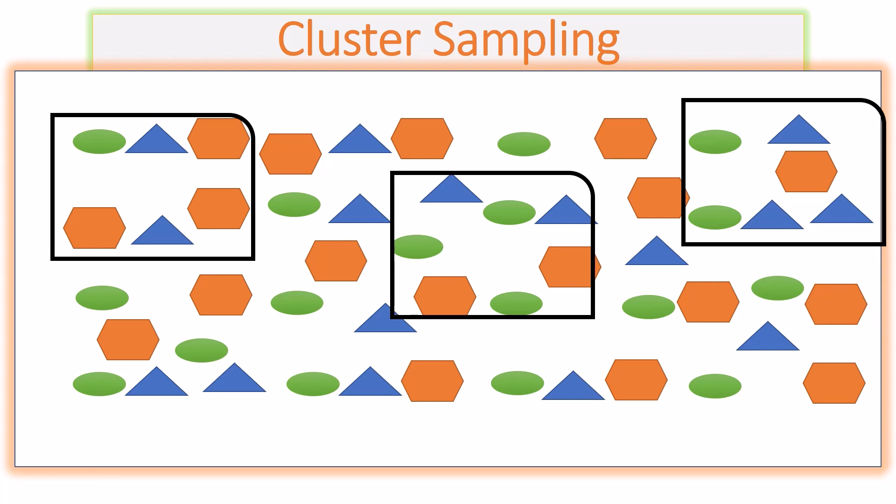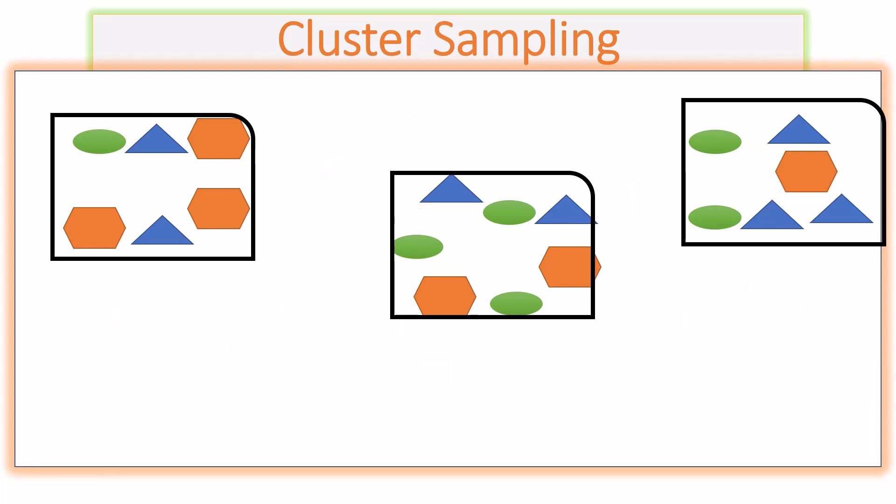Cluster sampling is applied when the clusters are homogenous across groups. However, there is heterogeneity within each cluster, meaning all type of people are found in each cluster. Cluster sampling can give a biased sample if these two conditions are not met.